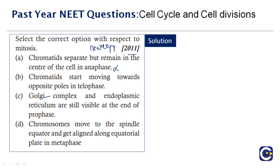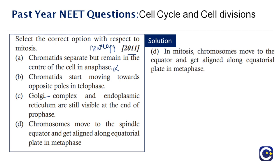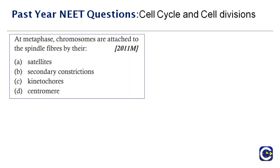Option D states 'chromosomes move to the spindle equator and get aligned along the equatorial plate in metaphase' — this is correct, as we discussed when chromosomes align during metaphase. Therefore option D is the correct answer.